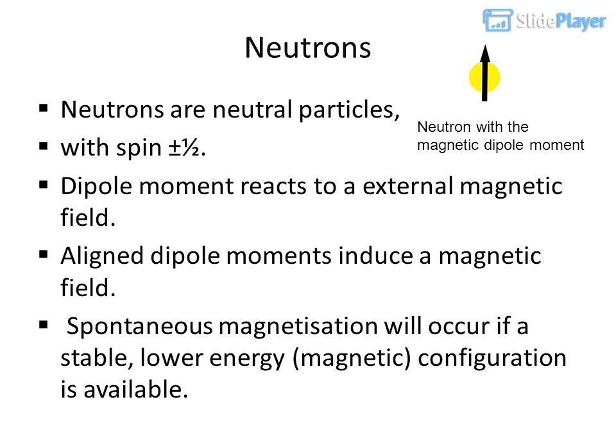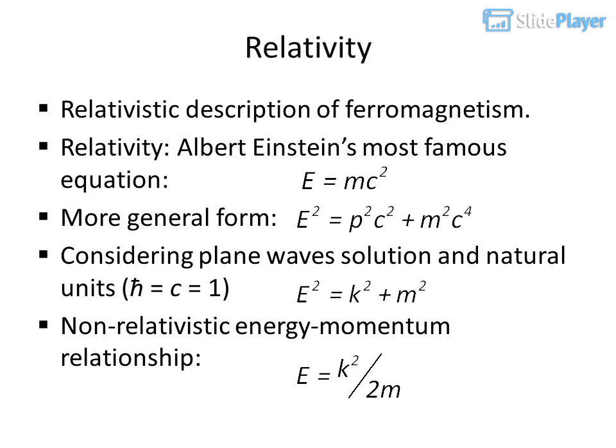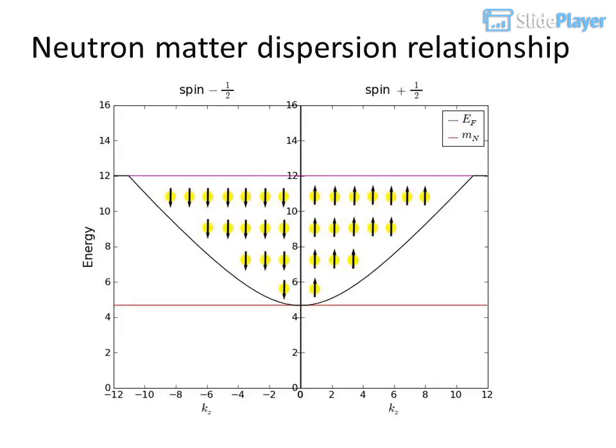Relativity: relativistic description of ferromagnetism. Using Albert Einstein's most famous equation in a more general form, and considering plane wave solutions in natural units where c equals 1, we arrive at the non-relativistic energy-momentum relationship and the neutron-matter dispersion relationship.